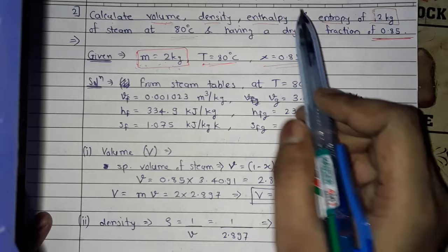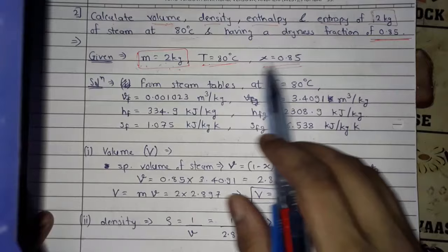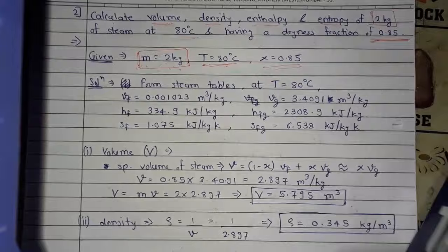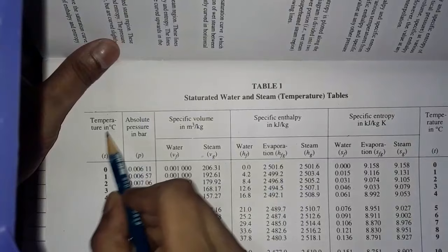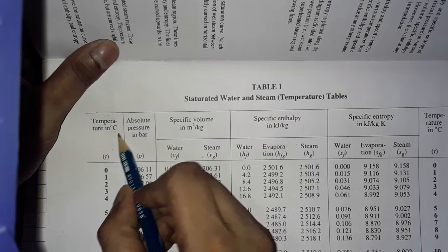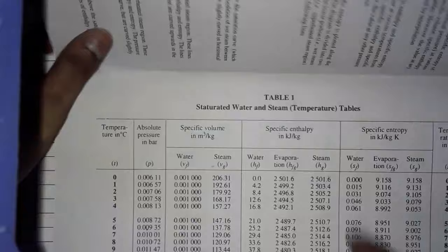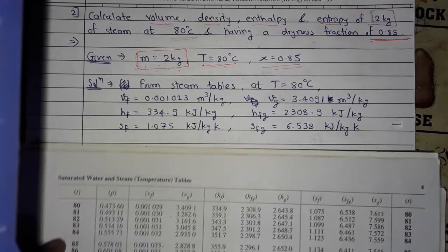For this problem we use the temperature steam table. All nomenclatures are the same, except the first column is temperature in degree Celsius instead of pressure. We need 80°C, so let's find 80°C in the steam table — here it is.